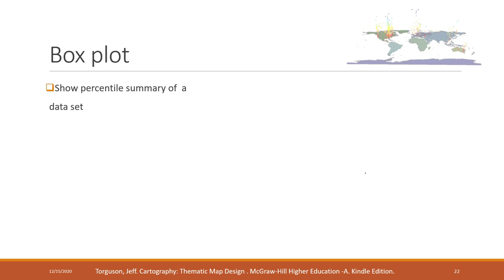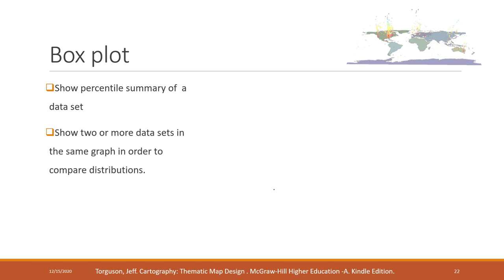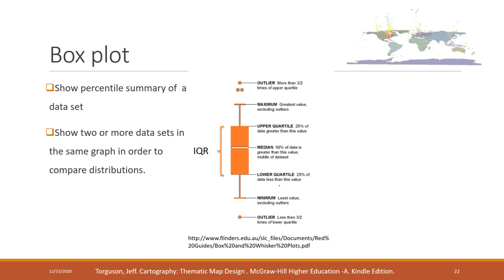A box plot is used to show the percentile summary of a data set, and it is great for comparing the distribution of multiple variables. The middle line of the box plot shows the median values — remember, that is not the average, it is the median. Within the box, we have the upper quartile and the lower quartile. The two bars indicate the maximum and minimum values, excluding outliers.